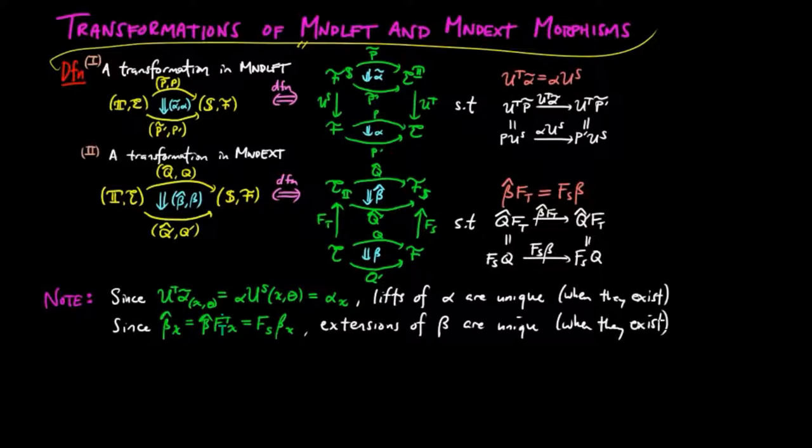Therefore, we can omit α̃ and β̂ in the notation of the natural transformations, as we will often do.